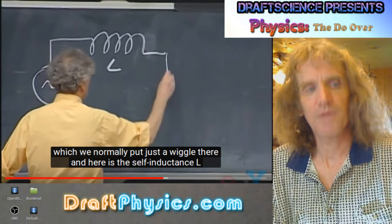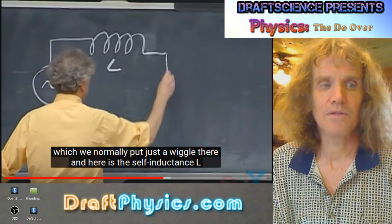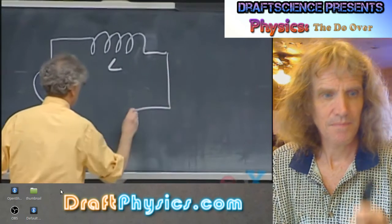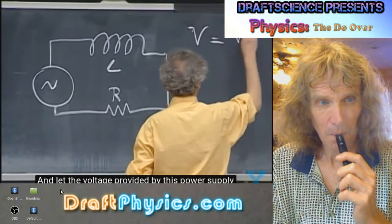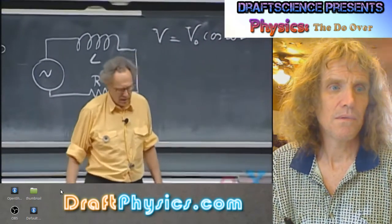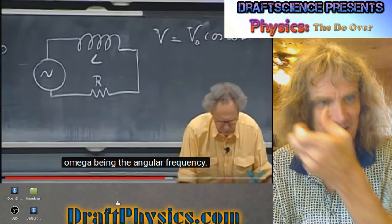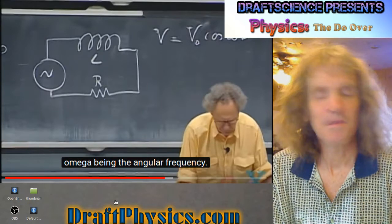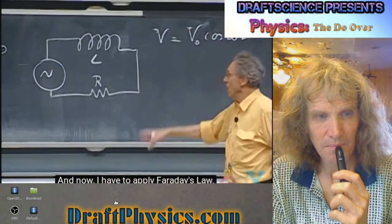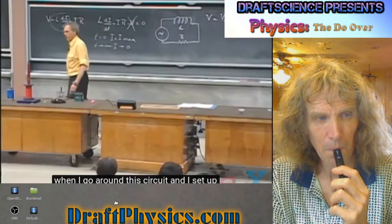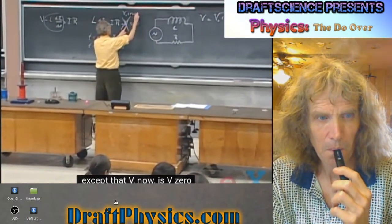As the polarity keeps switching, the magnetic field keeps switching, which means it's consuming itself constantly — so it's not going to behave as much like a battery. Here is the resistor R. Let the voltage provided by this power supply be V0 times the cosine of omega t, omega being the angular frequency. I have to apply Faraday's law — not Kirchhoff's rule — when I go around this circuit and set up the differential equation. The differential equation is exactly like before, except that V is now V0 times the cosine of omega t.